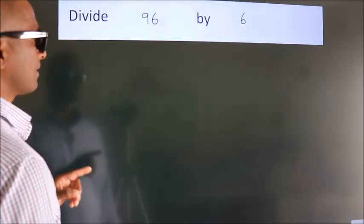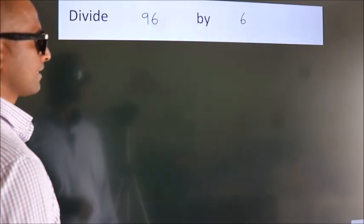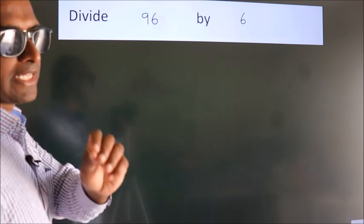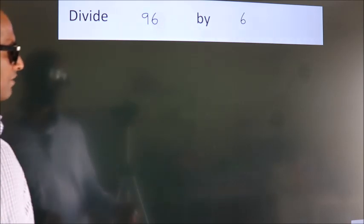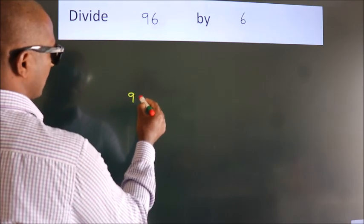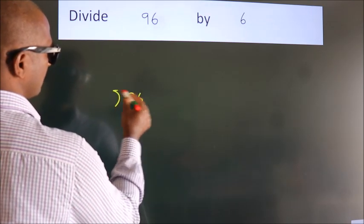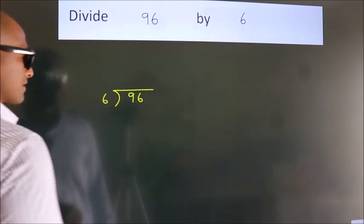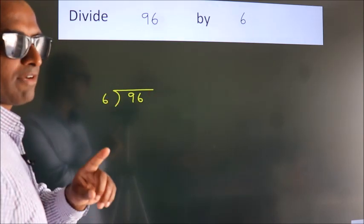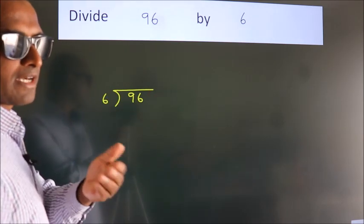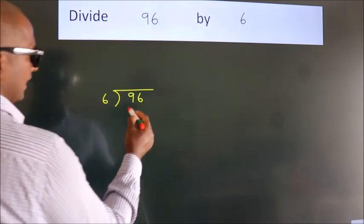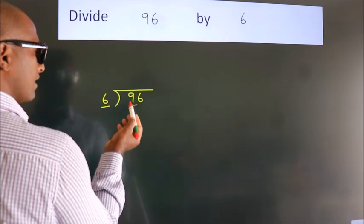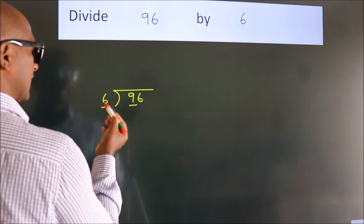Divide 96 by 6. To do this division, we should frame it in long division format: 96 inside and 6 outside. This is Step 1. Next, we look at 9 — the closest number to 9 in the 6 times table is 6.